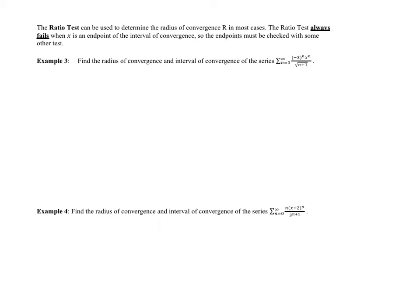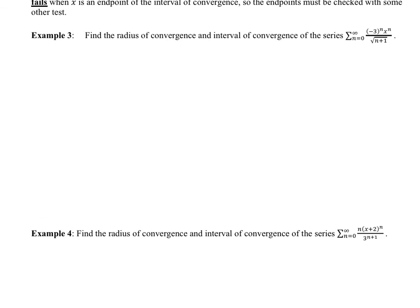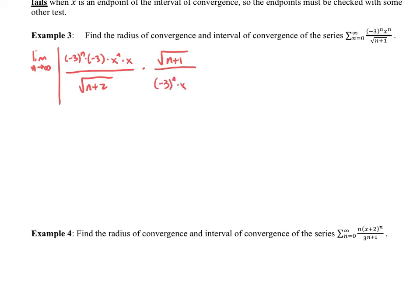In example 3, we are going to find the radius of convergence and the interval of convergence given this particular power series. I am going to start off by taking the limit as n goes to infinity of the original with n plus 1. So we have the absolute value of negative 3 to the n times negative 3 to the first, times x to the n times x to the first.